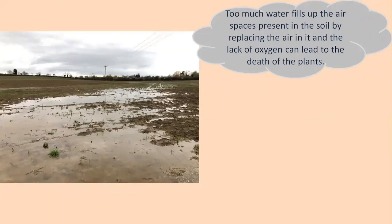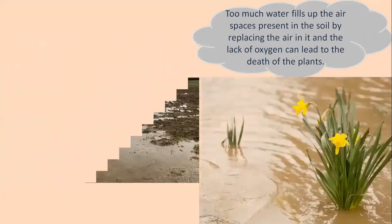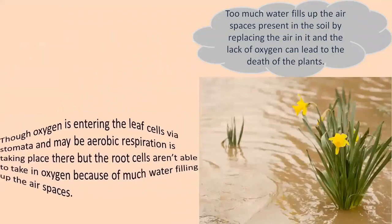As I mentioned at the start, each and every part of the plant respires. Though oxygen is entering the leaf cells via stomata and aerobic respiration is taking place there, the root cells aren't able to take in oxygen because too much water fills up the air spaces. Hence in such cases, energy has to be obtained via anaerobic respiration only.